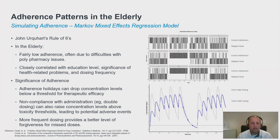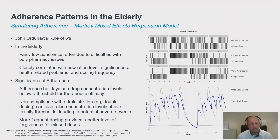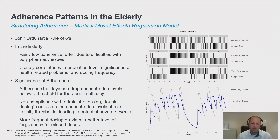The significance of not accounting for adherence can play a big role in how outcomes are observed both in virtual simulations and in real-world settings. Adherence holidays can drop concentration levels below a threshold for therapeutic efficacy, but non-compliance and double dosing can also push levels above and into a toxicity range, potentially leading to adverse events. There is also a challenge in the elderly population in balancing the best dosing regimen — more frequent dosing provides better forgiveness for missed doses but can lead to more skipped doses, while daily dosing may be more convenient but is less forgiving on missed doses.